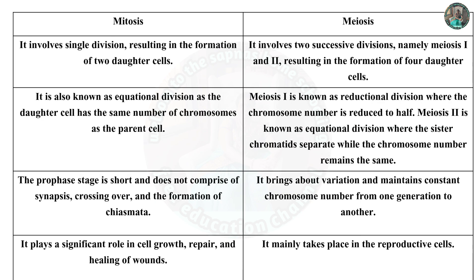B. Mitosis and Meiosis: Mitosis involves a single division resulting in the formation of two daughter cells. It is also known as equational division as the daughter cell has the same number of chromosomes as the parent cell. The prophase stage is short and does not comprise synapsis, crossing over and the formation of chiasmata. It plays a significant role in cell growth, repair and healing of wounds. Meiosis involves two successive divisions — meiosis I and meiosis II — resulting in the formation of four daughter cells. Meiosis I is known as reductional division where the chromosome number is reduced to half. Meiosis II is known as equational division where the sister chromatids separate while the chromosome number remains the same. Meiosis brings about variation and maintains constant chromosome number from one generation to another, and mainly takes place in reproductive cells.